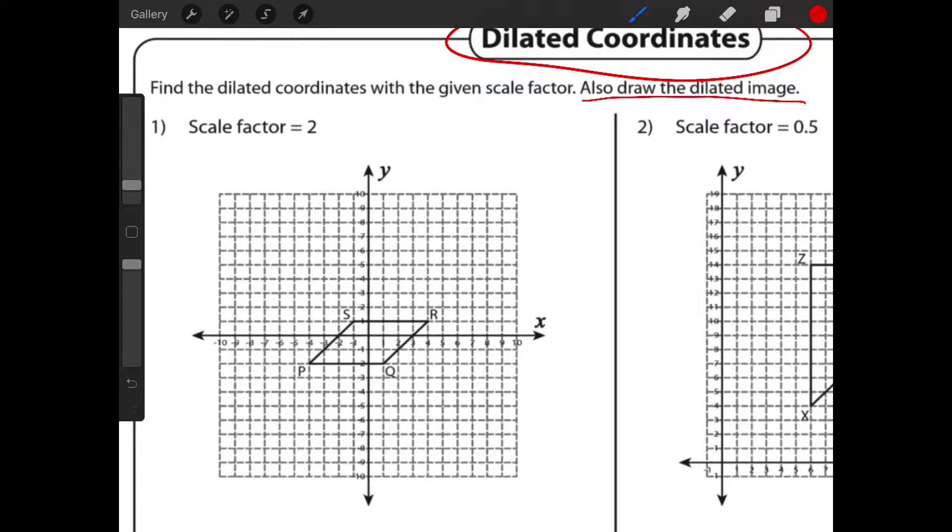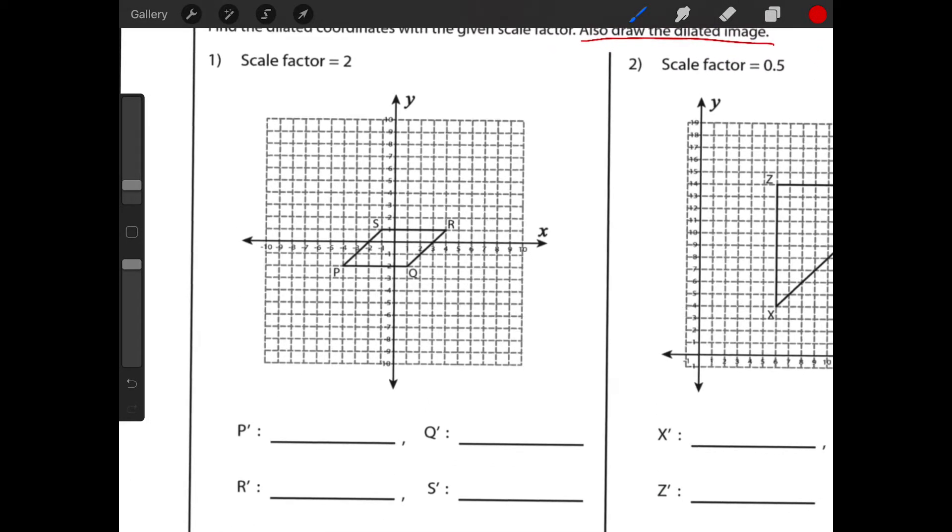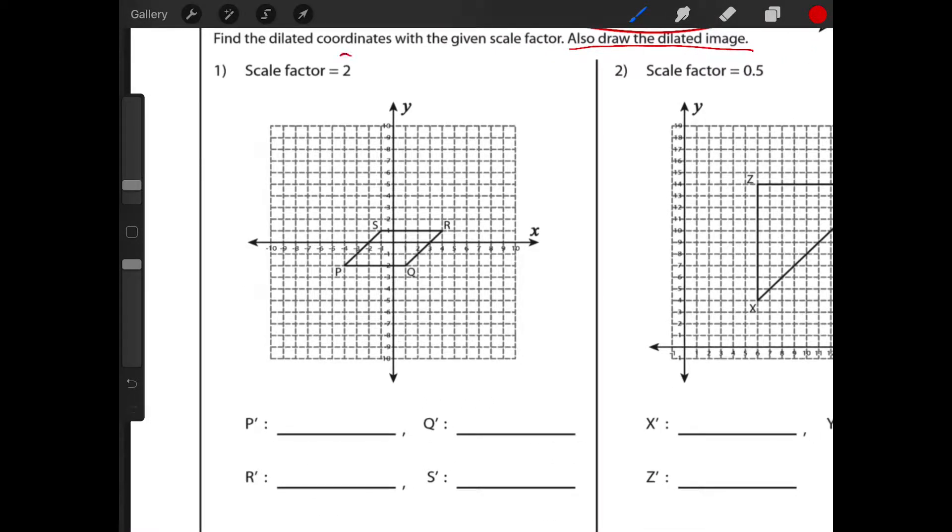Let's go ahead and start off with number one. It says find the dilated coordinates with the given scale factor. Also draw the dilated image. There is two parts to this. To start off with, we're going to look at the scale factor and identify, first of all, scale factor of two means that we're going to take this original image. A scale factor of two means two times the size. So that parallelogram QRSP is going to be double the size when we're all done with this.